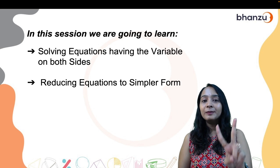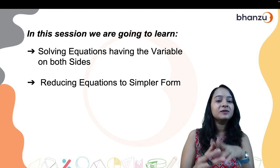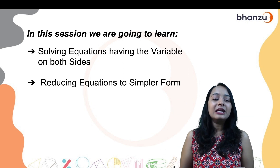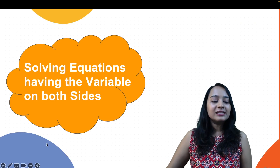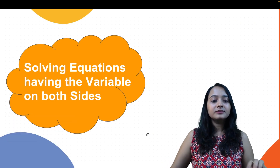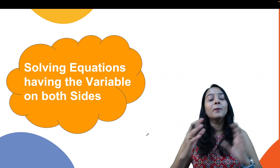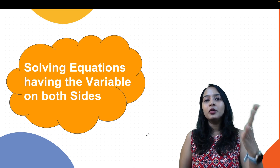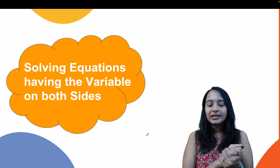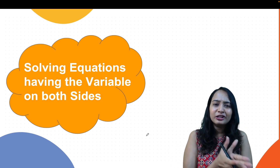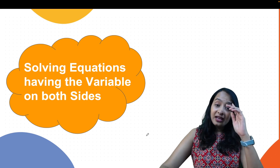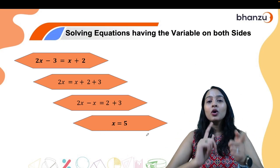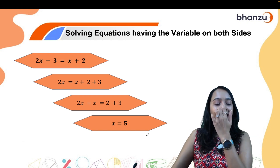In today's class, we're going to complete two major and very important concepts: solving equations having variables on both sides, and reducing equations to simpler form. Till now we have solved equations with one variable on one side, isolated that variable, and found the value by balancing method or transposing method. Now how would you solve an equation when you have variables on both sides?